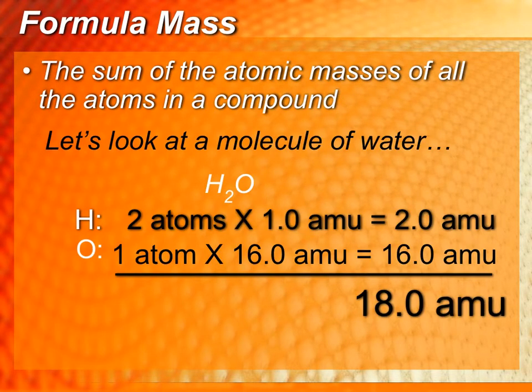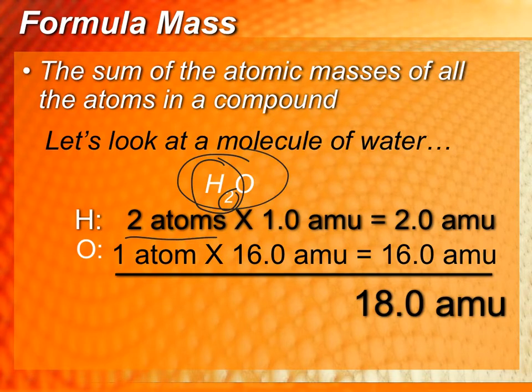So in our example here to find the formula mass, or the mass of the chemical formula, what we're going to do is we're going to sum the atomic masses of all the atoms in the compound. So our first example here is going to be water. We know that water has two hydrogens because we have this little two coefficient here, so we're going to say we have two atoms of hydrogen.